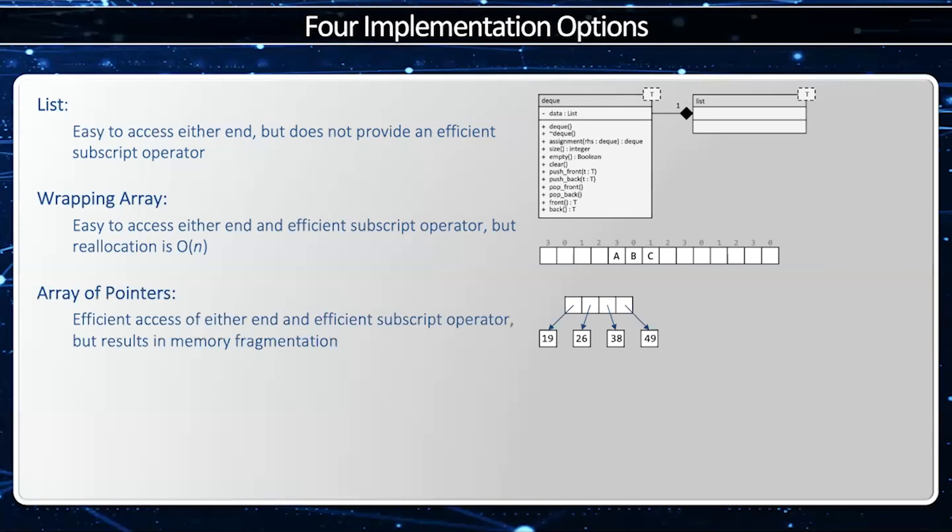The next implementation is an array of pointers. Here we have a wrapping array implementation, but the wrapping array is an array of pointers, and then each one refers to the actual element. Therefore, when we have to resize our array, we don't actually have to move the elements. And this is very effective.